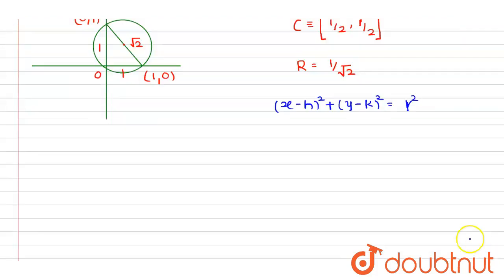h and k are nothing but coordinates of center. Now substitute the value: we will get (x - 1/2)² + (y - 1/2)² = 1/2, which is square of 1 by root 2. This is what we get.